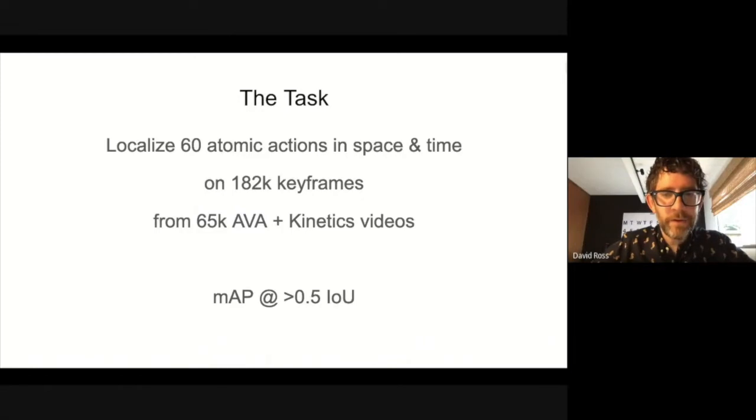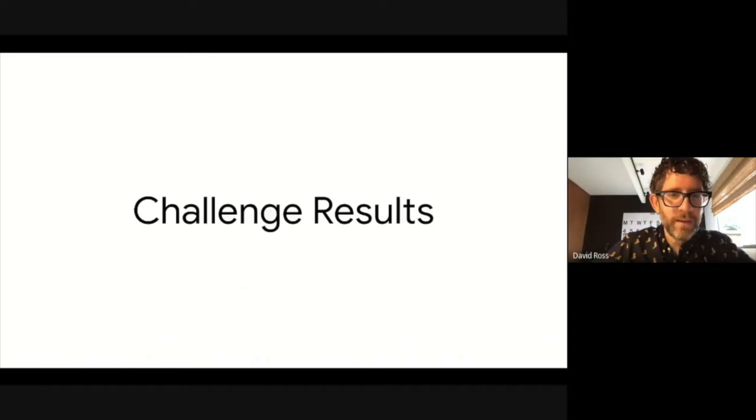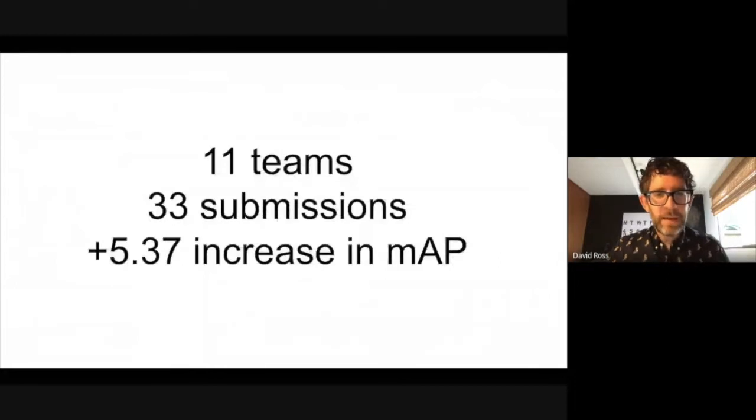So the task this year is to locate 60 of the most common AVA actions in space and time on the combined AVA Kinetics test set. The performance metric is the mean average precision evaluated at 0.5 IOU. Now, I'm excited to present the results of the challenge. So this year, we had 11 teams participating and 33 total submissions, which is a decrease from last year. I expect, unfortunately, that the challenges presented by COVID-19 played a role here. Nevertheless, the winning team was able to beat last year's score by a very impressive 5.37 points of MAP. So, without further ado, the winners of the 2020 AVA Kinetics challenge are,